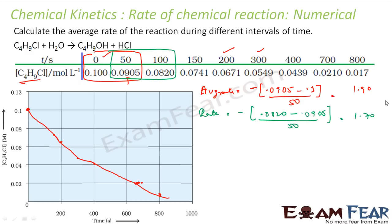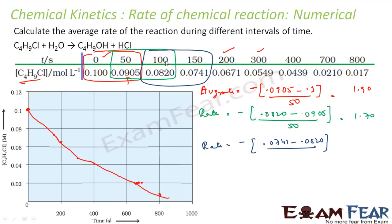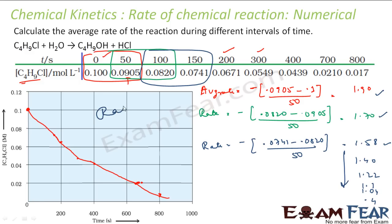For the third interval, the rate is minus of (0.0741 minus 0.0820) divided by 50, which gives 1.58 × 10⁻⁴. Continuing to solve, you see the rate is decreasing: 1.9, 1.7, 1.58, then 1.4, 1.22, 1.1, 1.04, and finally 0.4. The rate of reaction is clearly decreasing.